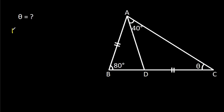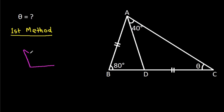The first method: in any triangle, if this angle is alpha and this angle is beta, then this exterior angle will be alpha plus beta. So here, this angle will be 40 degrees plus theta.